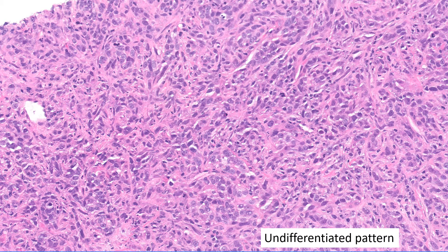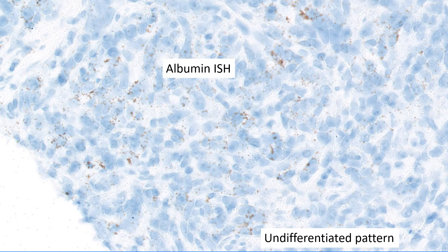Perhaps the most diagnostically challenging pattern is the undifferentiated pattern. The challenge is: how do you prove this is a hepatocellular carcinoma? We eventually called this HCC because the patient had a prior hepatocellular carcinoma, and this was metastatic somewhere in the abdomen. While it looked nothing like an HCC, we did have one stain that worked — albumin in situ hybridization was positive. Remember, albumin is fairly specific and sensitive for hepatocellular carcinoma. Every other stain, including my favorite, Arginase 1, was negative. Between the prior history and the albumin, I was fairly happy to call this a metastatic HCC. But this pattern can be extremely challenging if you do not have a prior history of HCC.